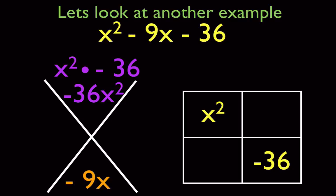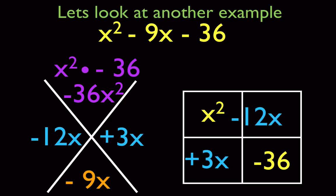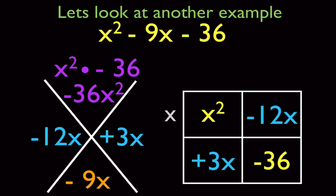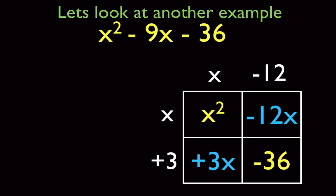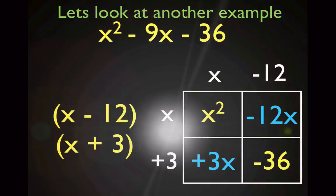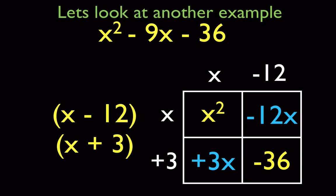So the first thing we know is that x squared and negative 36 go into the rectangle — that's the way we always set these problems up. Now we need to figure out how to break up our negative 9. The diamond problem is what does that for us: we bring our negative 36 and our x squared to the top, and our negative 9 to the bottom. Because that's a negative on top, I know I'm going to need one of each. It turns out that negative 12 and positive 3 work, because negative 12 times positive 3 is negative 36, and negative 12 plus 3 is negative 9. Those are going to go into our rectangle. X on each side, negative 12, and positive 3. Down below, you're going to fill in your two factors, which are x minus 12 and x plus 3.